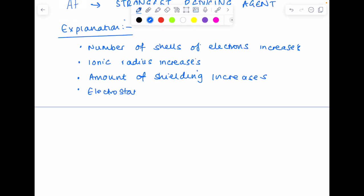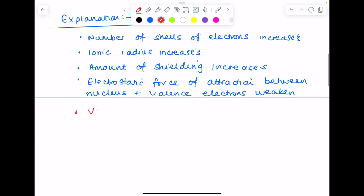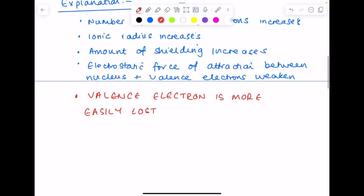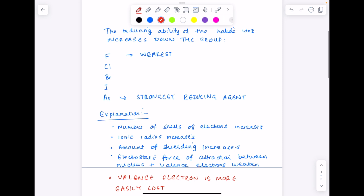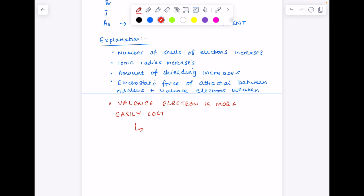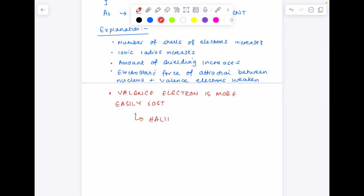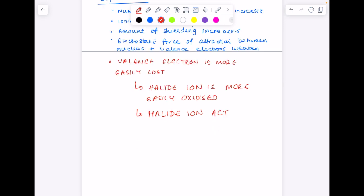The electrostatic force of attraction between the nucleus and valence electron weakens. And then the all-important point, which is that the valence electron is more easily lost. And that takes us back to our original definition of oxidation, which is all about losing electrons. So the halide ion is more easily oxidized. The halide ion acts as a stronger reducing agent.